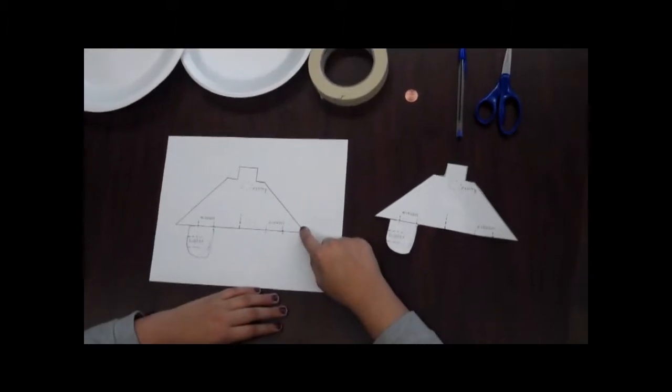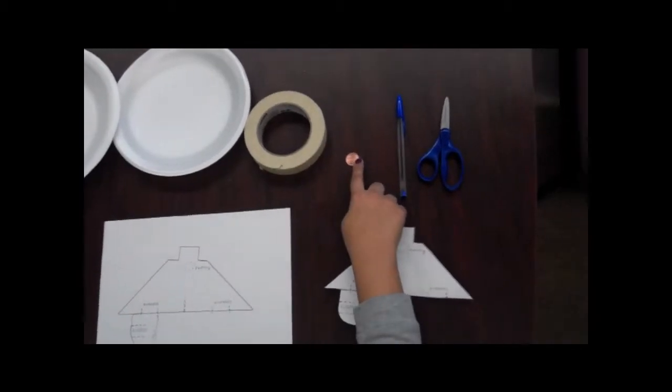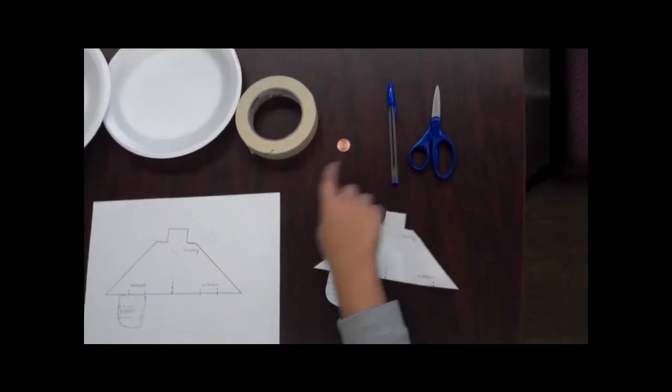You will need my supersonic glider template, a 9-10 inch styrofoam plate, clear tape, a penny, scissors, and a pen.